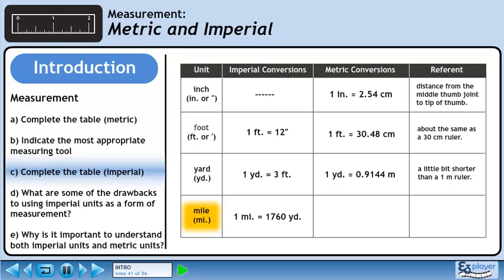The largest imperial unit commonly used is the mile. One mile is 1,760 yards. One mile is 1.609 kilometers. This is about the distance you can walk in 20 minutes.